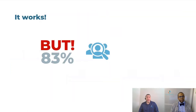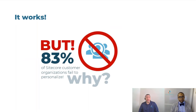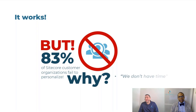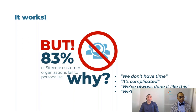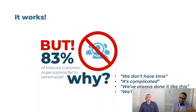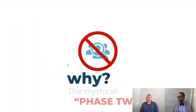Unfortunately, not many of them implement these features. We hear the same reasons over the course of our careers — things like 'we don't have time for that,' 'it's complicated,' 'we've always done things like this.' I remember working with an agency who had their own UX methodology. We showed them all the features of Sitecore for UX personalization, but they said 'we have our methodology' or 'we'll leave that to phase two.' And that phase two thing never happens. It's the mythical phase two.